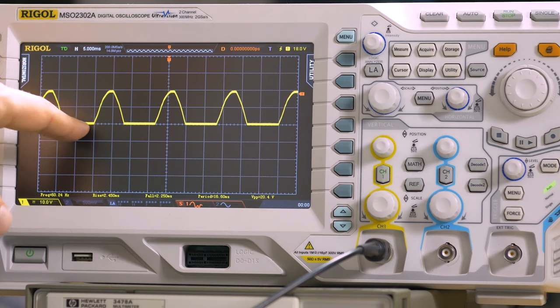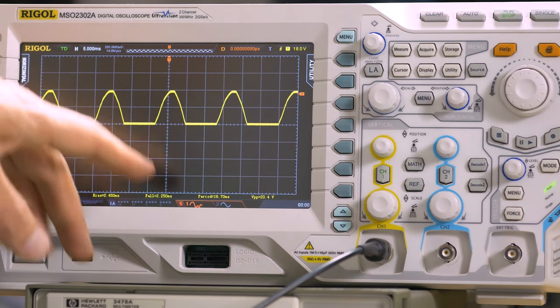In half-wave rectification, only the positive half cycle of the input AC voltage is converted into a DC voltage. The result across the load is a pulsating DC voltage with a 60Hz frequency. So that's how a half-wave rectifier works when the diode is considered to be ideal.